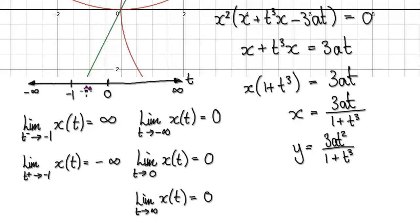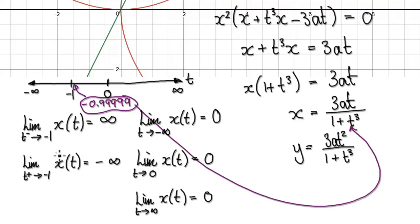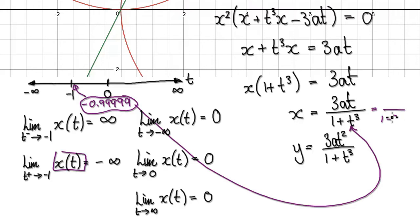So what that means is, imagine you're heading towards negative 1 from the right-hand side — so just to the right of negative 1, a number like negative 0.something. When you put it into here, because we are trying to investigate what happens in the x movement direction, you've got a number that's just smaller than 1. So when you cube it, it's going to be a number smaller than 1. So the denominator will be 1 take away a number just smaller than 1, meaning the whole denominator will be something very, very small.